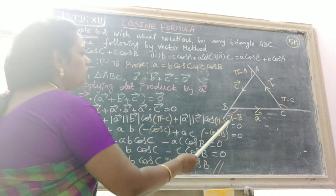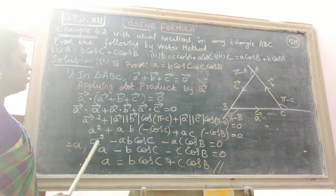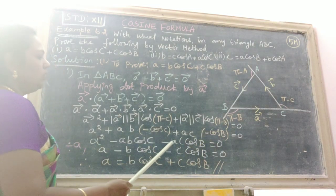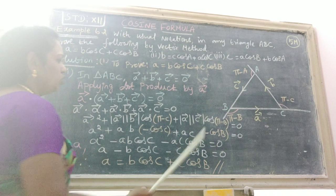Cos(π - B) equals minus cos B. Therefore A squared minus AB cos C minus AC cos B equals zero.